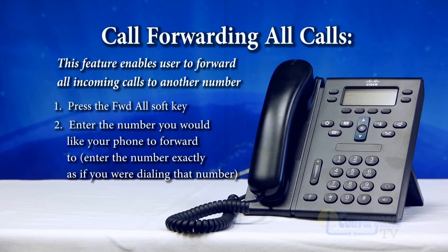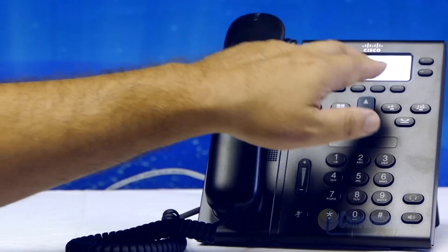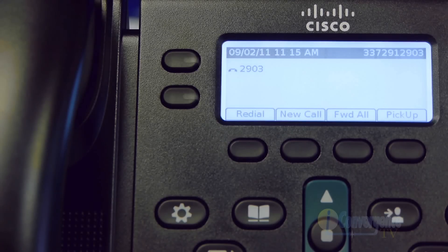If you're forwarding to an external number like your cell phone, you dial 9 to grab an outside line and then your cell phone number, and it will show forwarded to that number. When you get back to your office and want to accept calls at your desk again, it's very easy to toggle call forwarding off by just pressing the forward all button again — that releases the forwarding.